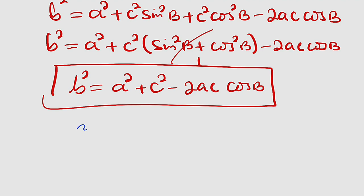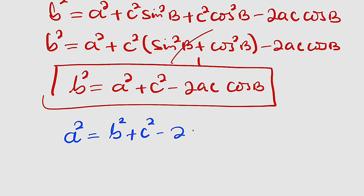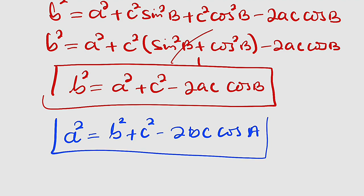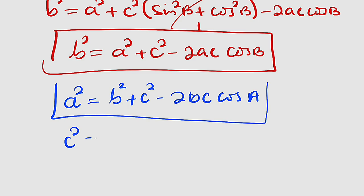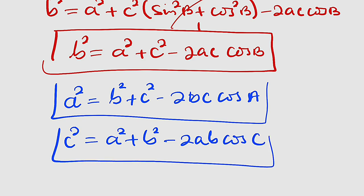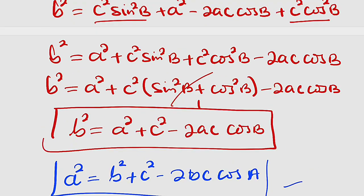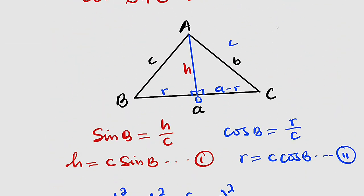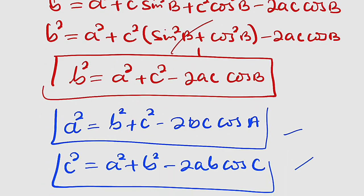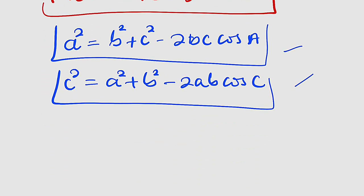You do the same derivation if you are looking for a or c. If looking for a: a squared equals b squared plus c squared minus 2bc cosine A. If looking for c: c squared equals a squared plus b squared minus 2ab cosine C. These are the three important formulas. Thank you for watching — do share with friends and colleagues, and don't forget to subscribe to my YouTube channel for more exciting videos. Bye!